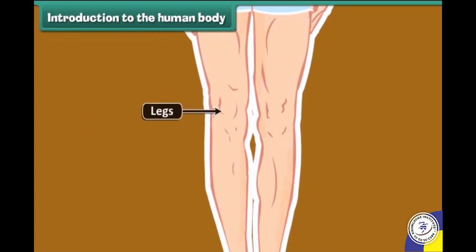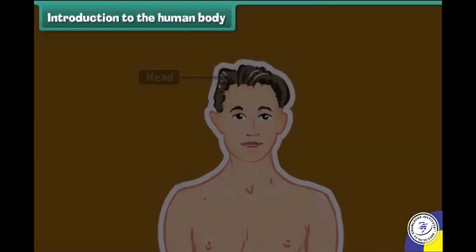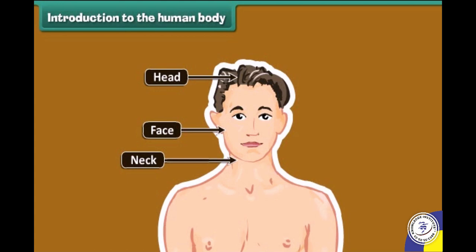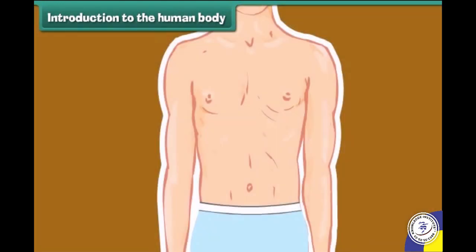As we can see here, head is the uppermost part of the body. We find hair present on the head. The next body part is our face. The face has eyes, nose, tongue and ears. Below the face is the neck, which joins the head to the rest of the body. It helps the head move towards right and left, and up and down. It is cylindrical in shape.